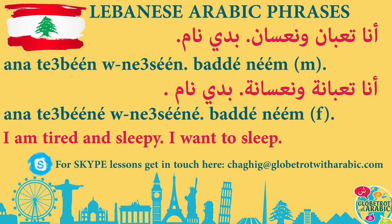Let's say it in feminine: Ana ta'abayne wa na'asane, Bde name. Let's break it down. Ana — ta'abayne — ta'abayne is 'tired' in the feminine. In the masculine we said ta'abane; in the feminine we say ta'abayne. That 'a' sound at the end makes it feminine. Na'asane — again, na'asane with the 'a' sound at the end is the feminine form.